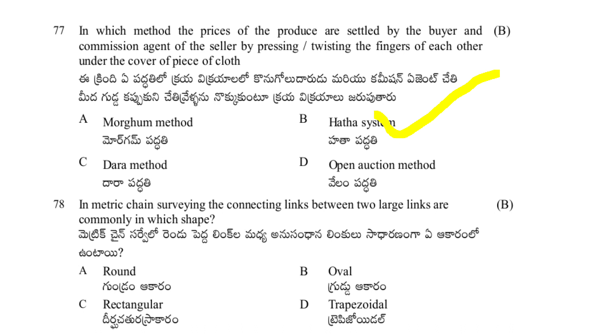In metric chain surveying, the connecting links between two large links are commonly in which shape? Options: round, oval, rectangular, trapezoidal. The answer is oval.